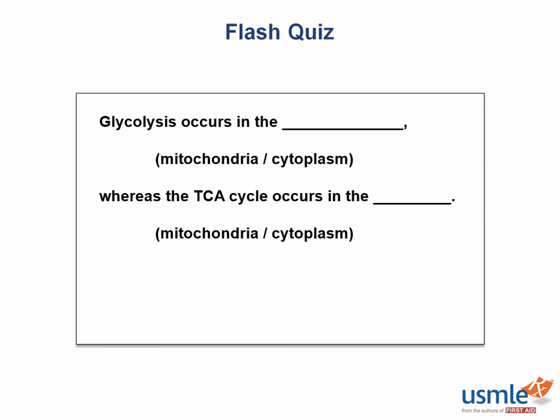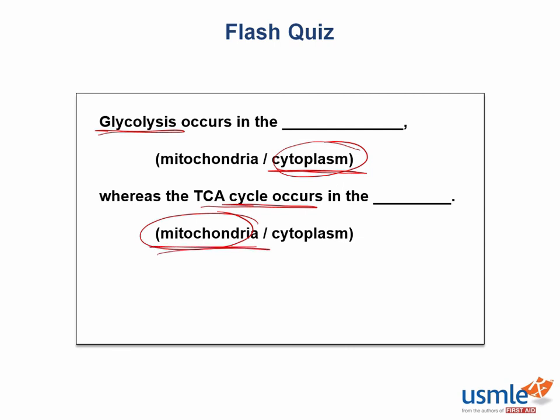Let's take a shot at a flash quiz. Glycolysis occurs in the cytoplasm, whereas the TCA cycle occurs in the mitochondria. It's important to remember where these two pathways occur: glycolysis in the cytoplasm, the TCA cycle within the mitochondria.